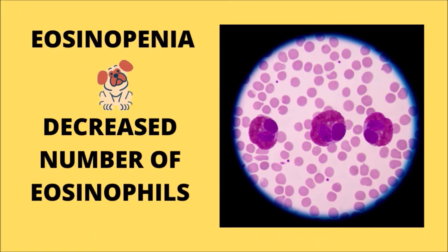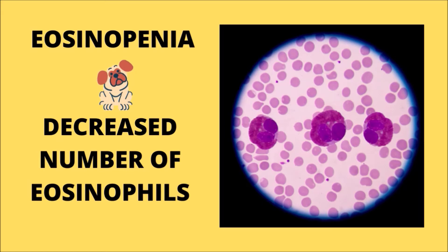In simpler terms, eosinopenia is a decrease in the number of eosinophils in the blood sample, but eosinopenia may be difficult to document by a routine white blood cell count. Eosinophils may be too few to be observed in the leukocyte differential count of normal animals. Eosinopenia in a sick pet may be likely if 0% eosinophils are seen and concurrent lymphopenia is present.